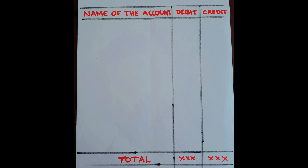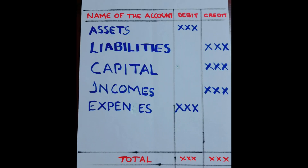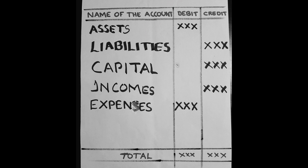The format of trial balance has three columns: first column is the name of the account, then two amount columns on the right side — first the debit column, then the credit column. For preparation, we follow the same logic as the basics of accounts. Asset accounts like furniture and cash should be shown in the debit column. Liability items like sundry creditors and bills payable should be shown in the credit column.